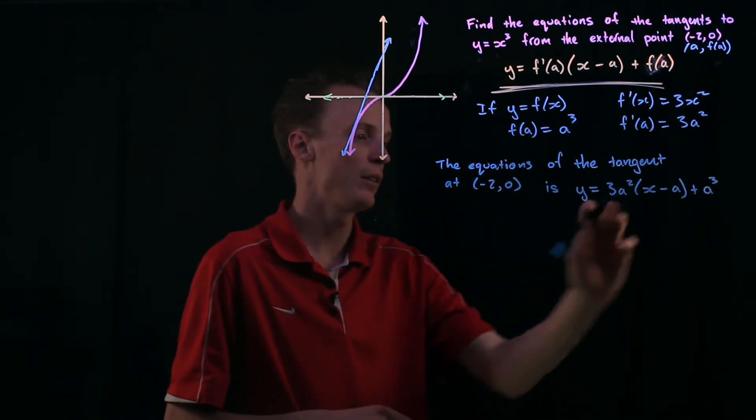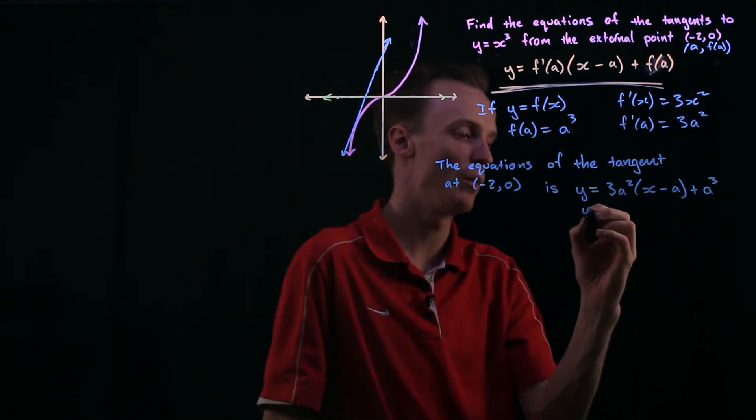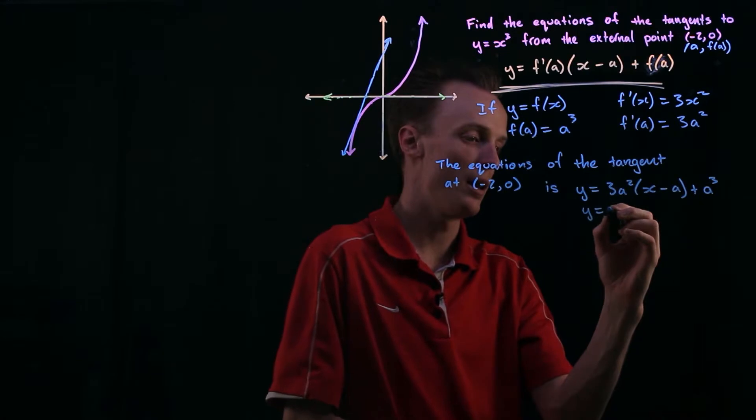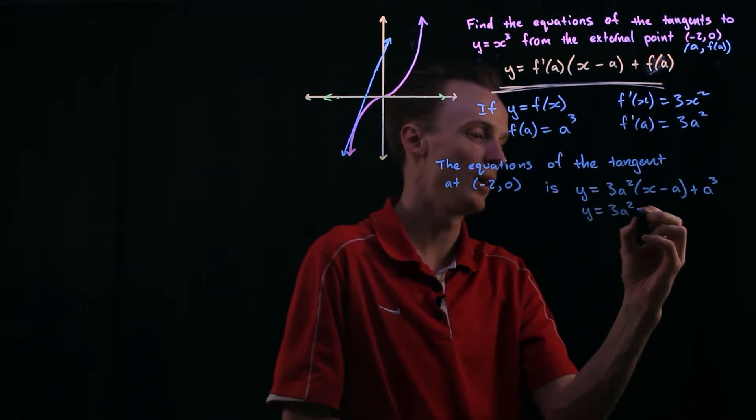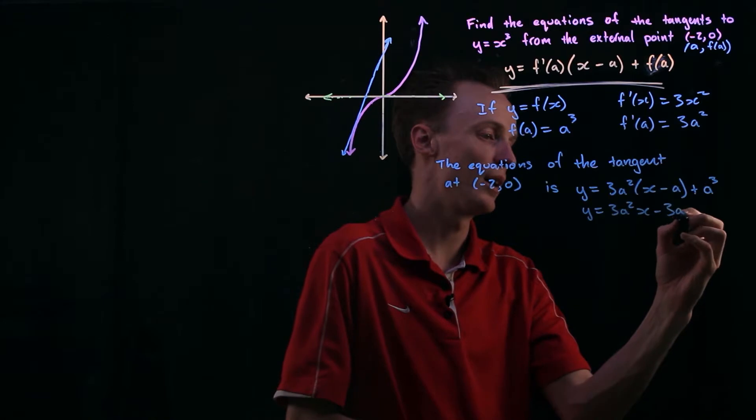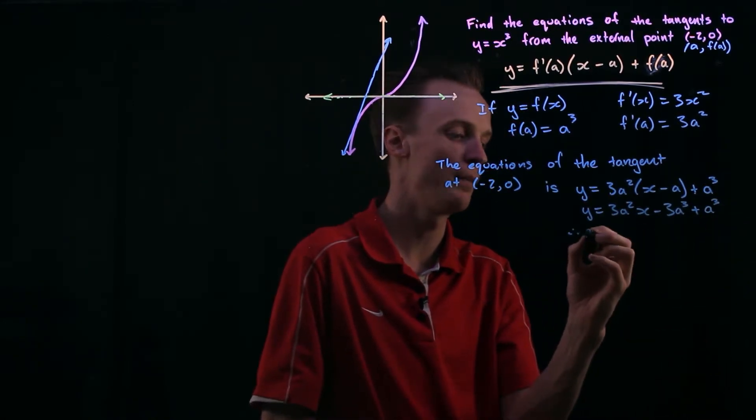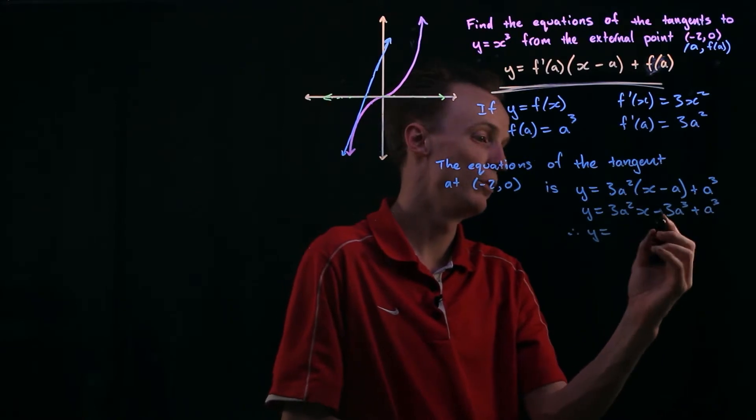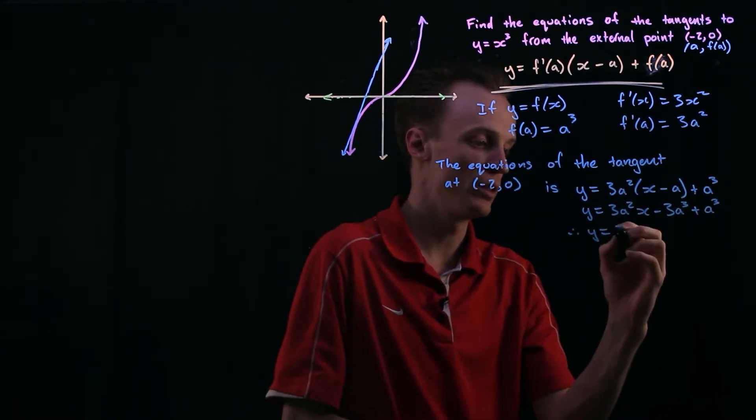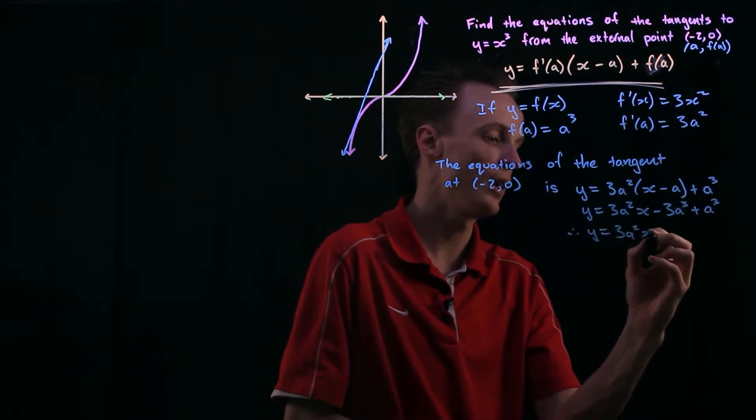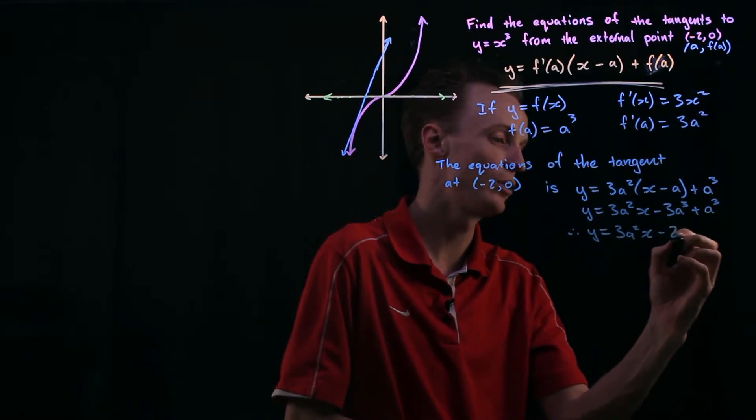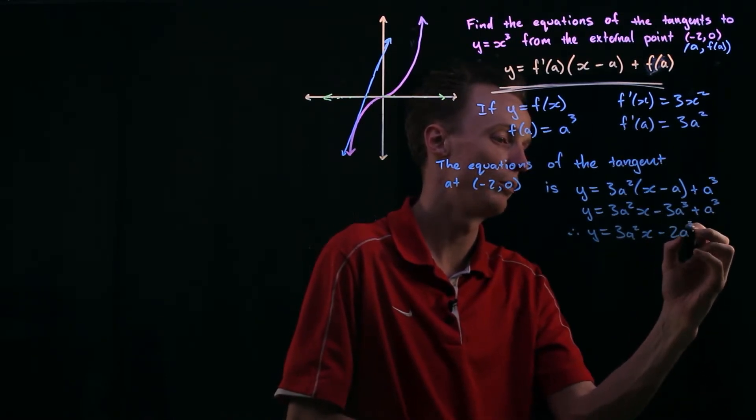So from here I can expand this out so y will equal 3a squared x minus 3a cubed plus an a cubed which if I simplify that y will equal, it's just those two, so 3a squared x minus 2a cubed.